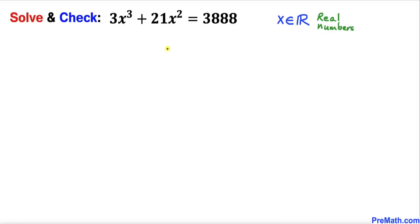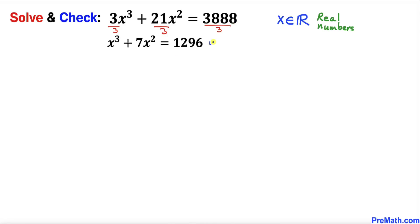Let's go ahead and get started with the solution. If we scan this given cubic equation, we can see that all of these terms are divisible by 3. So let's divide each and every term by 3 across the board, and here's our new cubic equation: x³ + 7x² = 1296.